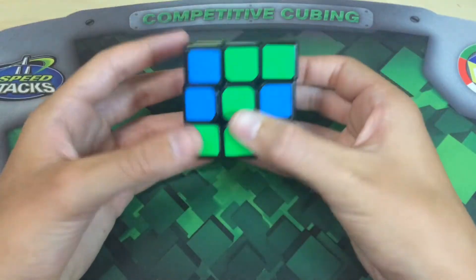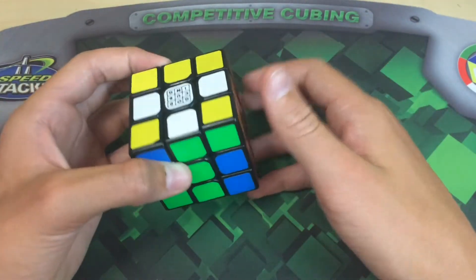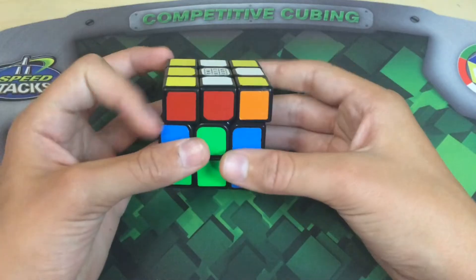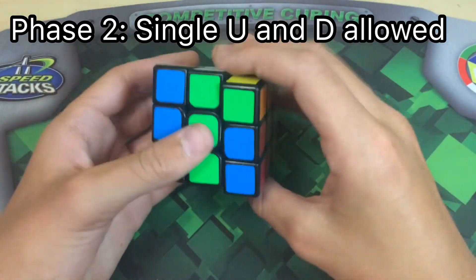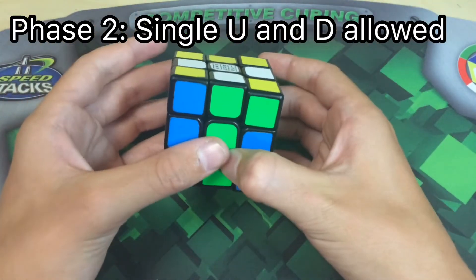And once you feel that it's fairly mixed, you move on to the next constraint, which now allows you to do single U moves and single D moves, but you have to use double moves on the left, right, front, and back sides still.